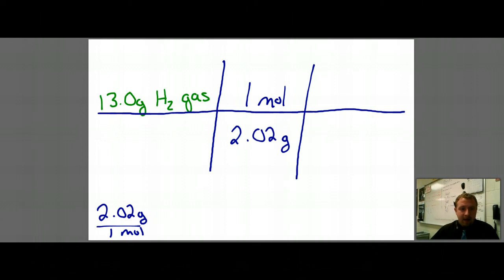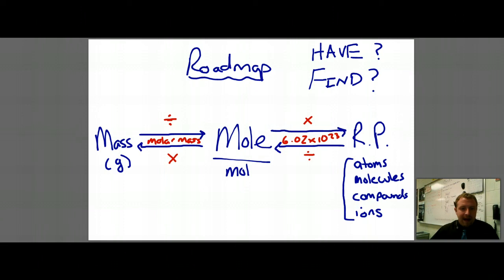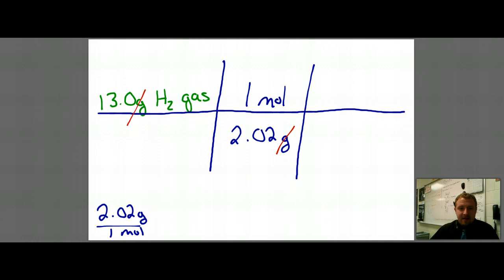Now notice what's going to happen here. Yes, the grams are going to cancel. But I'm going to take 13, and I'm going to have to divide by two. Well, if we go back to our roadmap, if I'm going from mass to moles, I divide. That's exactly what's happening here. So I take my 13, and I divide by 2.02. And for those of you who are working through this with me, you should definitely have your calculating device.